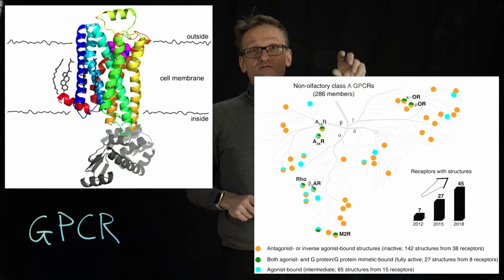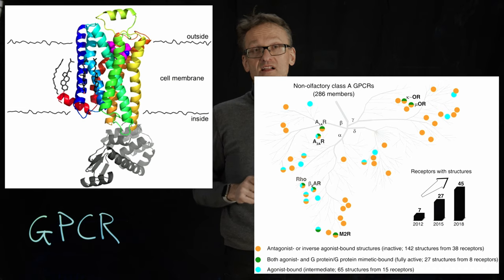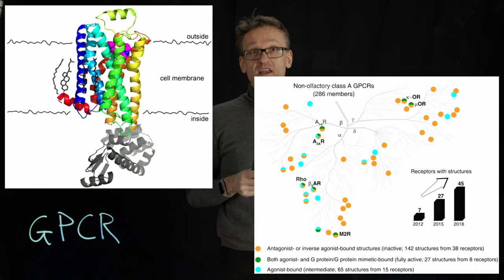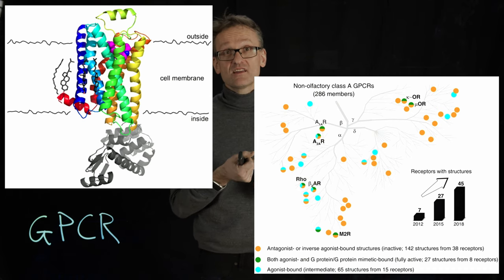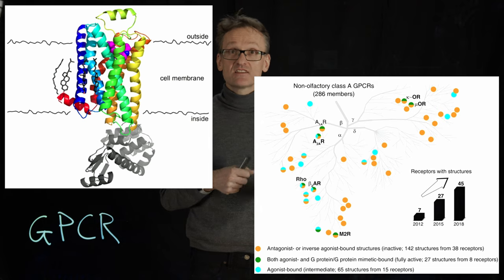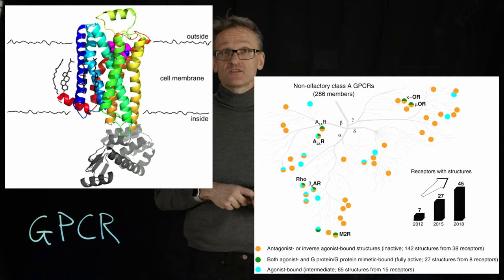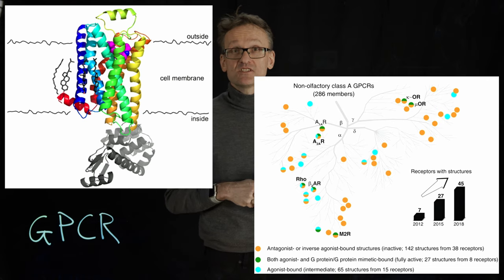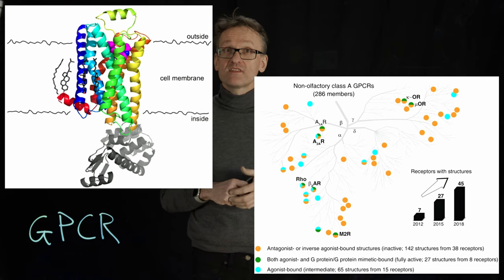This is a phylogenetic tree of all the GPCRs we know, and you can see how this has been exploding just the last few years. For many of these we now have structures both in an activated and then inactivated states, with the various compounds bound and everything. So we're starting to understand maybe not everything about this channel, but we know a whole lot more that is going to help us to do drug design.